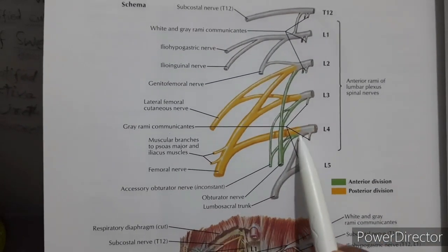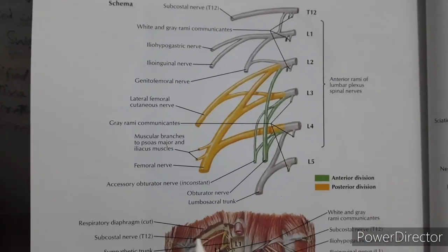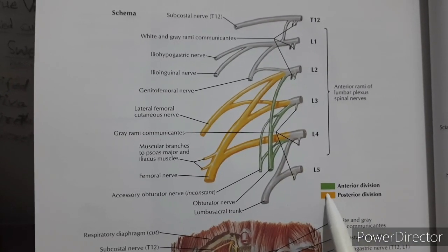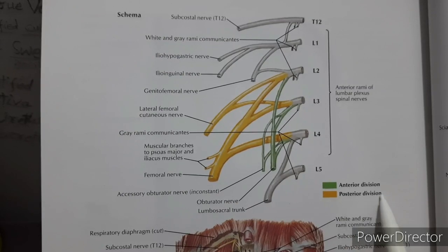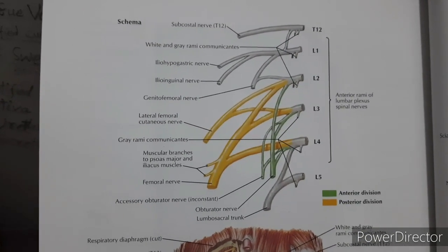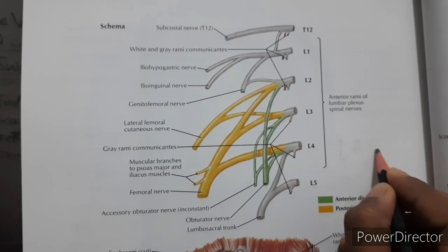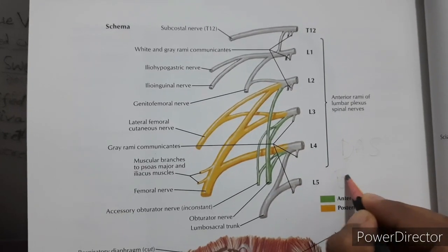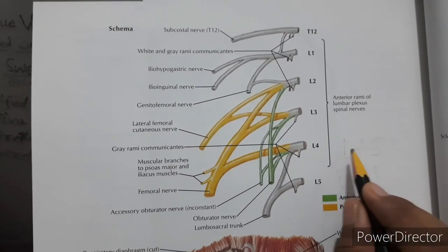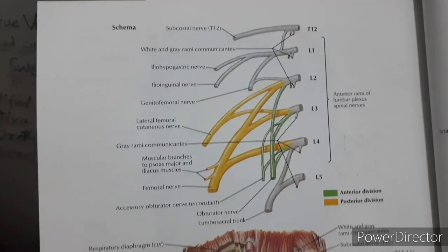The lumbosacral trunk is formed by L4 and L5, and L4 is also called the nervus furcalis. In the diagram, green color represents the anterior division and yellow represents the posterior division. Posterior is also called dorsal and anterior is also called ventral. You can learn this by the mnemonic DAS and EVM: Efferent-Ventral-Motor for basal plate, and Dorsal-Afferent-Sensory for alar plate.